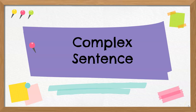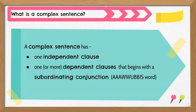Complex sentences. A complex sentence is made up of two parts: an independent clause and a dependent clause. Remember that an independent clause is a group of words that could stand on its own as a complete sentence. It has a subject and a verb, and it expresses a complete thought.